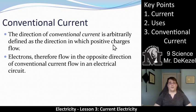Electrons, therefore, flow in the opposite direction of the conventional current flow in an electrical circuit. Hopefully, as we move on, we can just focus on conventional current. We won't talk about electron motion as much, but for now, we need to understand that conventional current moves the opposite way of the electron flow.